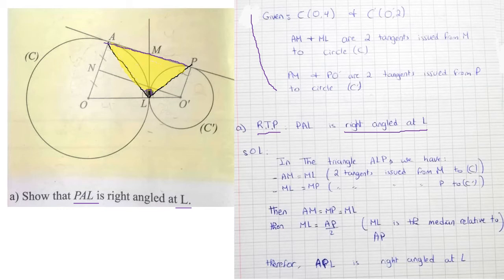Median relative to the hypotenuse means the median from L going to the hypotenuse AP must be LM. I want to prove this: that LM is the median going to the midpoint of AP, and that LM equals AP over 2. Now I start from what I know — I have tangents.